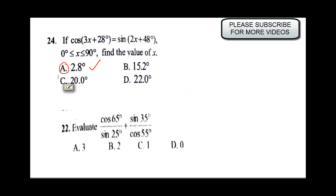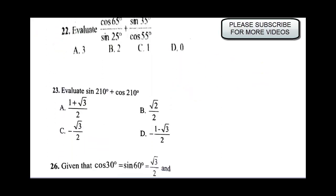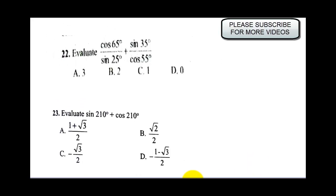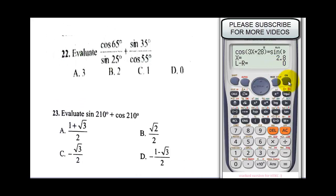The third question says: evaluate cos 65° over sin 25° plus sin 35° over cos 55°. To evaluate this, I'll bring up my fraction: cos 65, close bracket, press down arrow, sine 25, close bracket, push up arrow, put my plus, bring up fraction again, sine 35, close bracket, press down arrow.